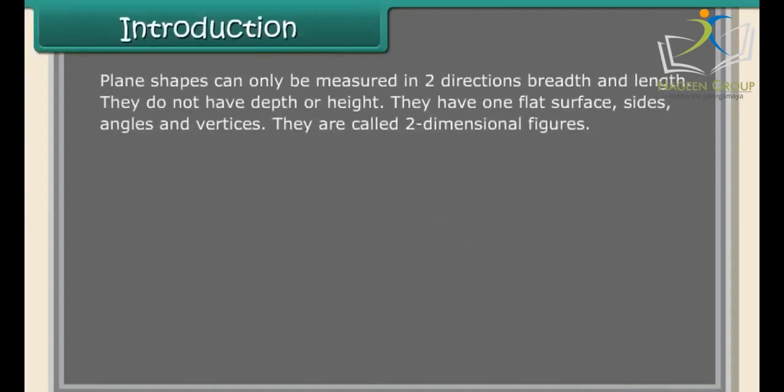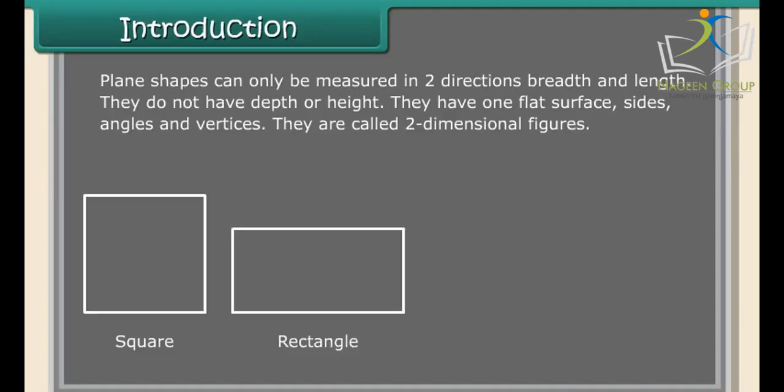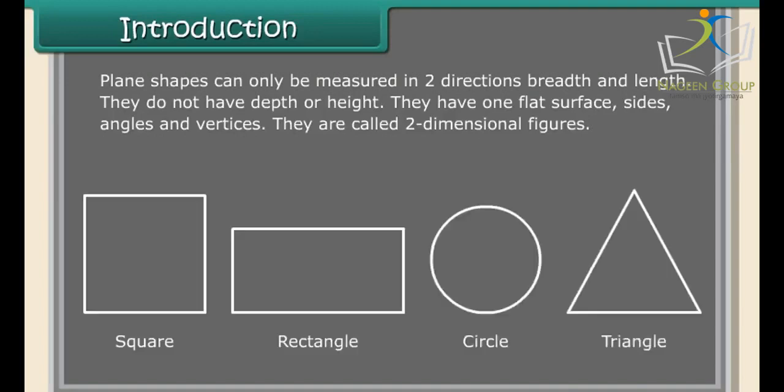Plane shapes can only be measured in two directions: breadth and length. They do not have depth or height. They have one flat surface, sides, angles, and vertices. They are called two-dimensional figures, such as square, rectangle, circle, and triangle.